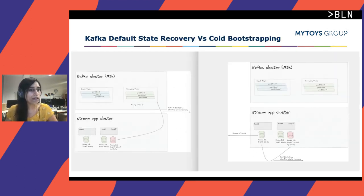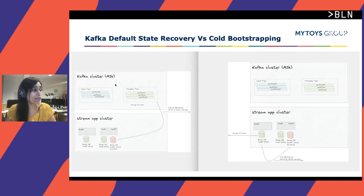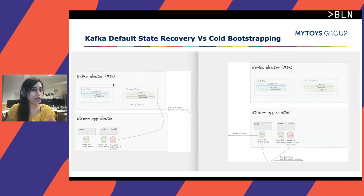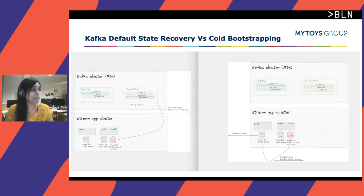By default in Kafka, the changelog topic is used for state recovery and replay, but in our case recovery was taking close to 24 hours. So we modified this default behavior: instead of replaying from the changelog topic, we used the active RocksDB. Every time a standby went down, instead of replaying from the changelog topic, we copied the RocksDB from the active instance into the standby. With this approach, data recovery was lightning fast — about eight seconds for 100 GB of data. This is what we call cold bootstrapping.